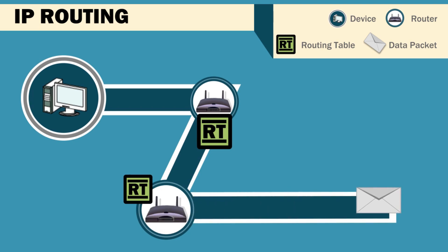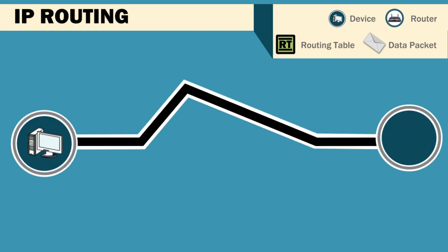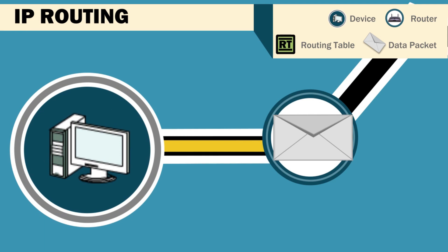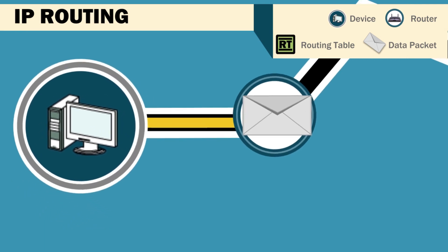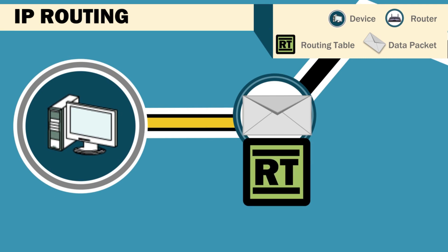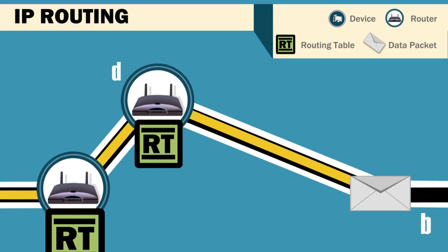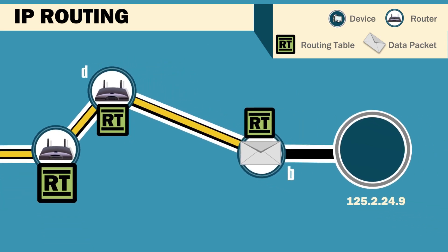Let's look at a more complex example. This time, the sending device is on the 5 network, and the destination address is 125.2.24.9. Just as before, the originating device sends the packet to its gateway router, which uses the routing table to find the next step needed to forward the packet to the 125 network. In this case, it's going to router D. Router D uses its table to determine the packet has to go to router B. Router B has the direct connection to the 125 network, so the packet moves to its final router before reaching the correct destination device.